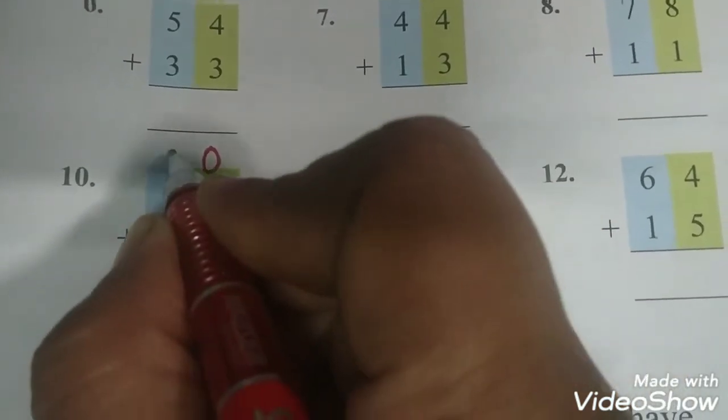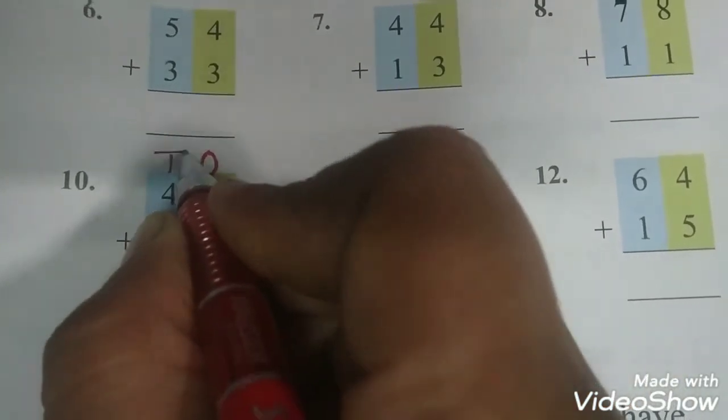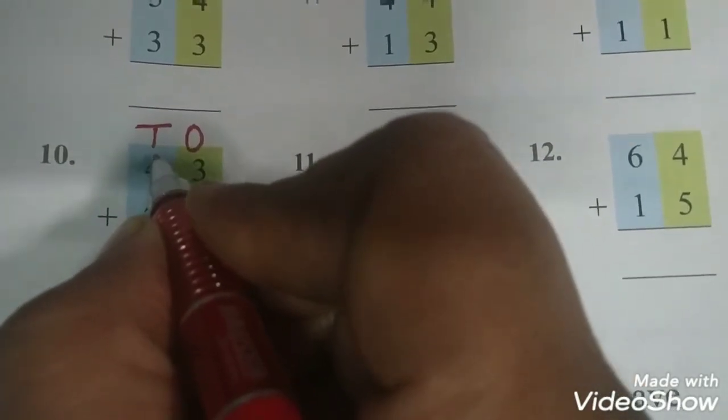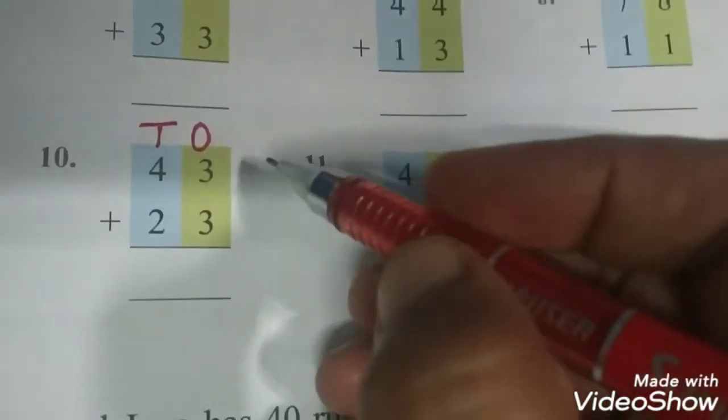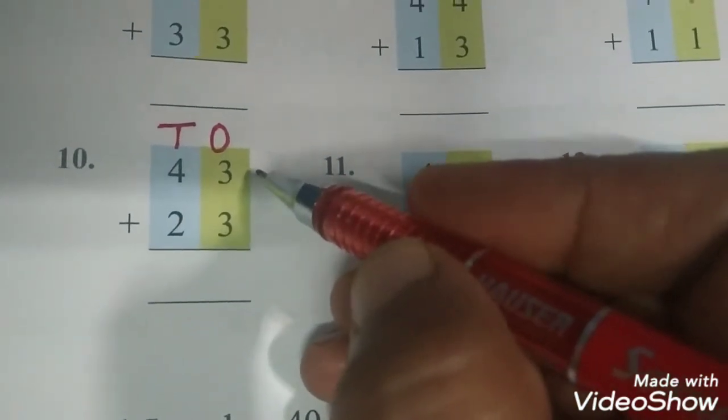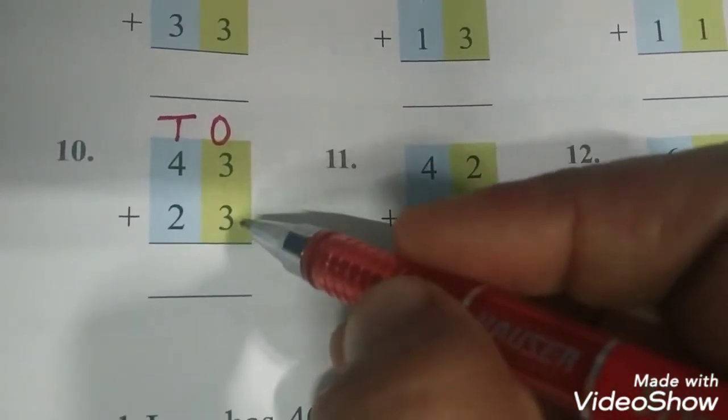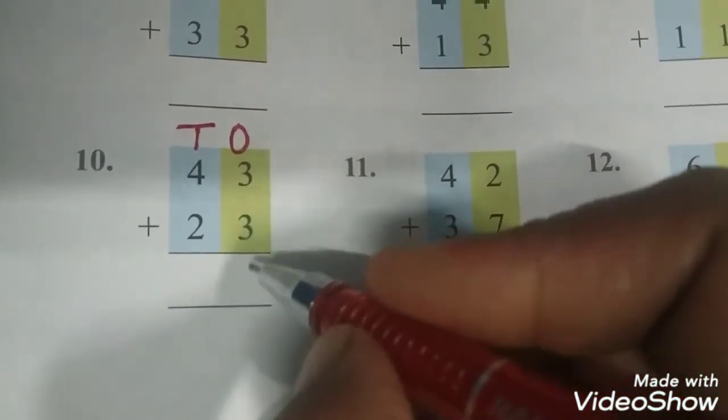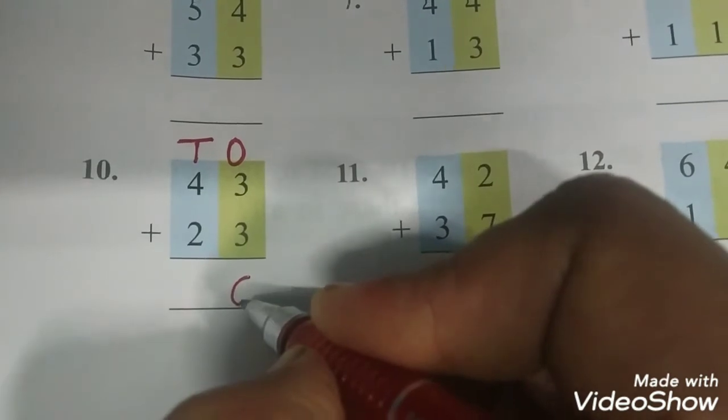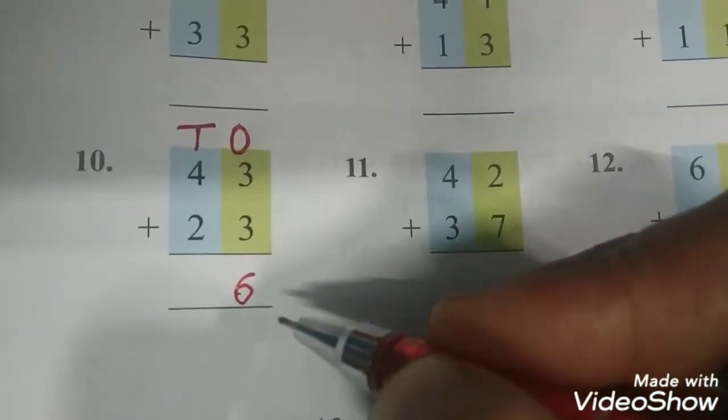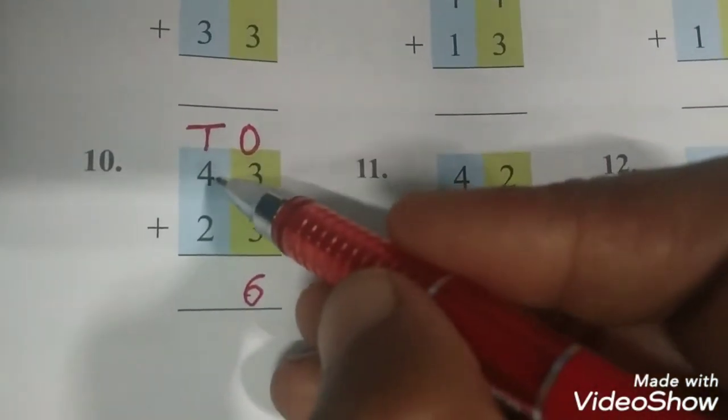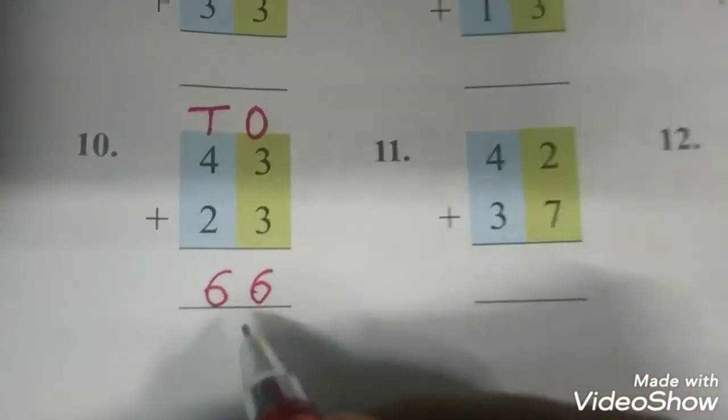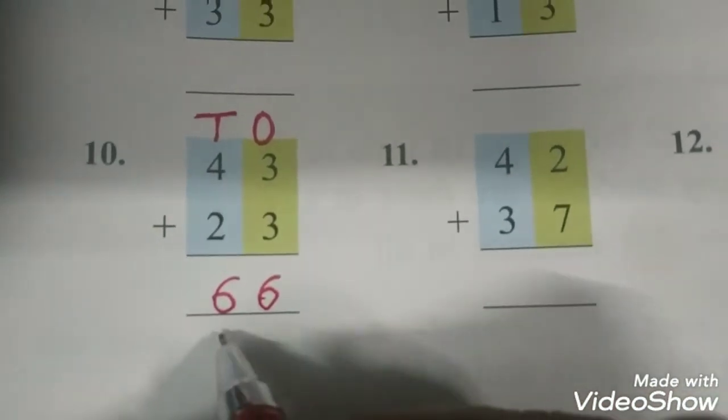Always remember, whenever you do addition or subtraction, ones mein ones ko plus karenge aur tens mein tens ko plus karenge. 3 plus 3 is 6. I write 6 over here. And 4 plus 2 is? Again 6. So I write 6 again. And my answer becomes 66.